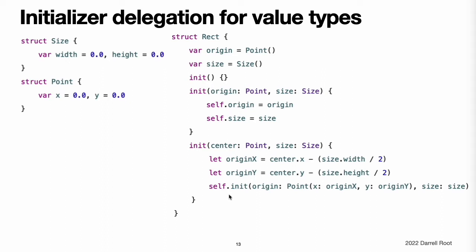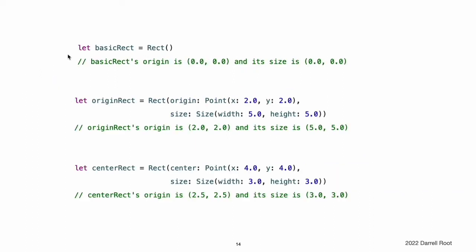Note: for an alternative way to write this example without defining the init and init(origin:size:) initializers yourself, see Extensions. Here are examples of calling the three initializers for Rect.